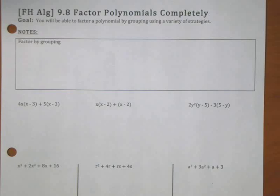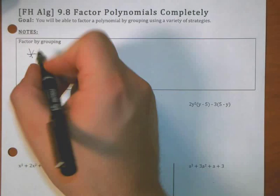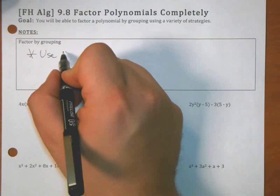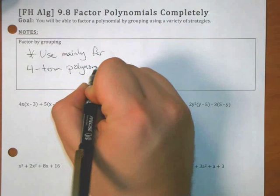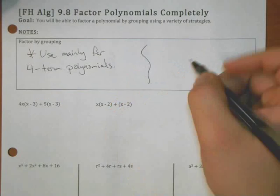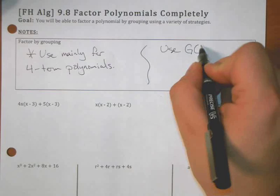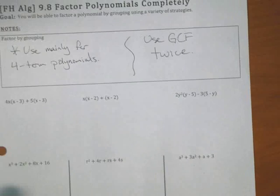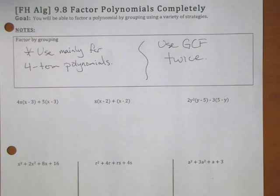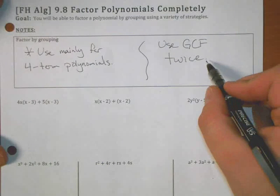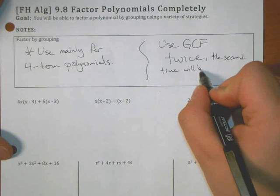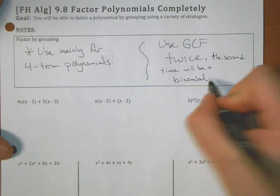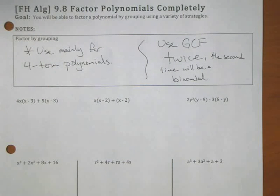Today we're going to look at a last method for factoring which is called factor by grouping. Factor by grouping is going to be a factoring method that we use primarily for four term polynomials. It's going to boil down to basically we're going to use greatest common factor twice. We're actually going to find examples where our greatest common factor is actually more than just a single term, but it's actually going to be a whole binomial.